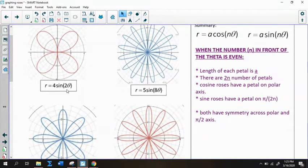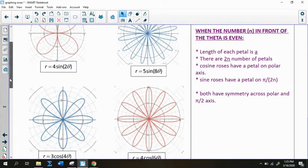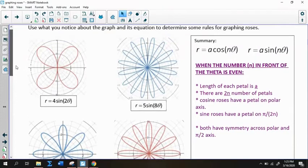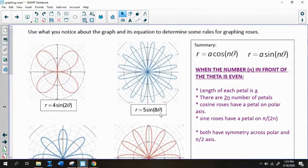So here are the first four graphs. All of them are sines and cosines, but they all have a number in front of the theta that is even. So we have 2 theta, 8 theta, 4 theta, and 6 theta. And so that's going to be a big deal, because if you don't have an even number, then it changes the shape of the rose.